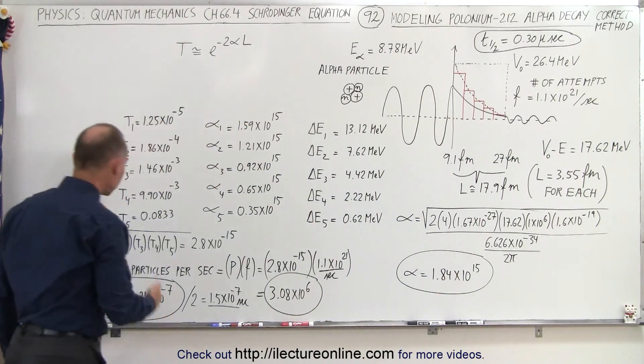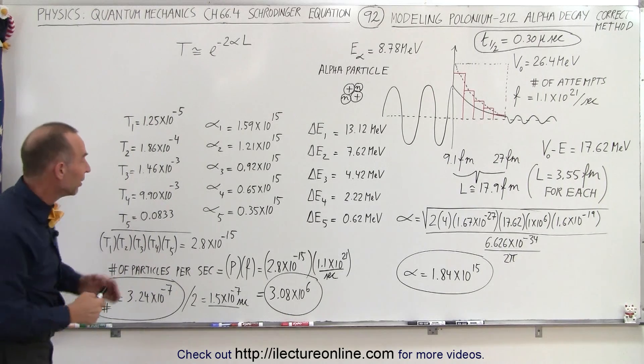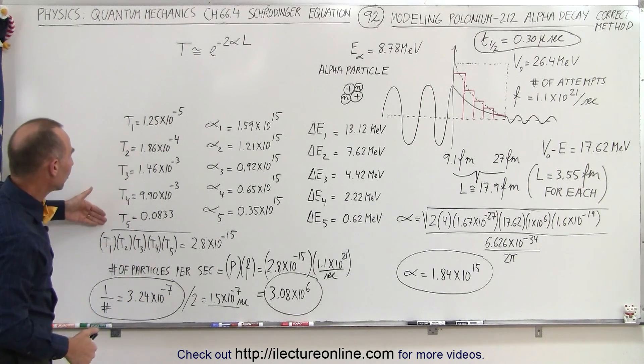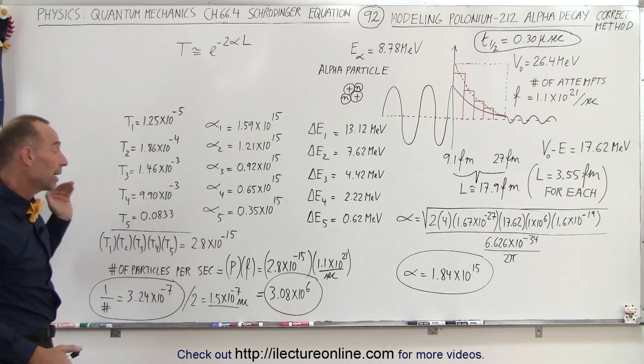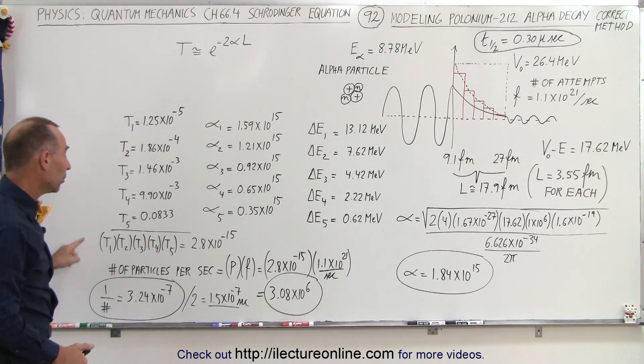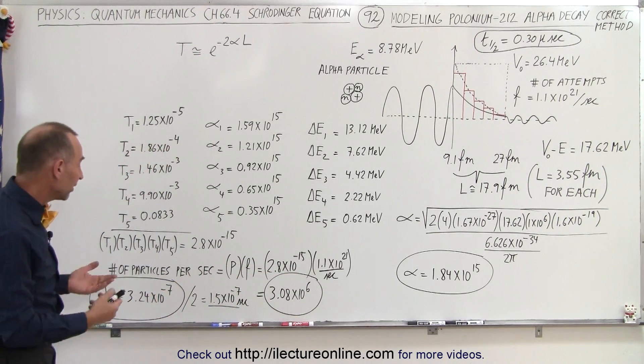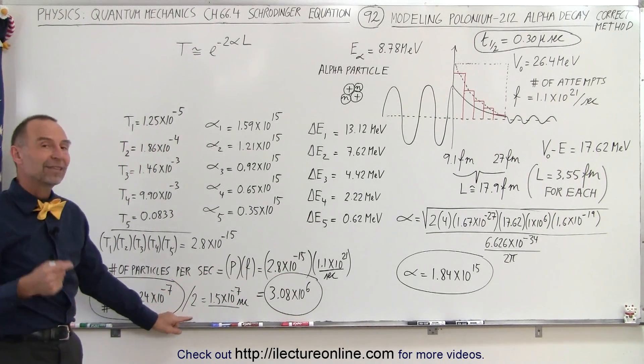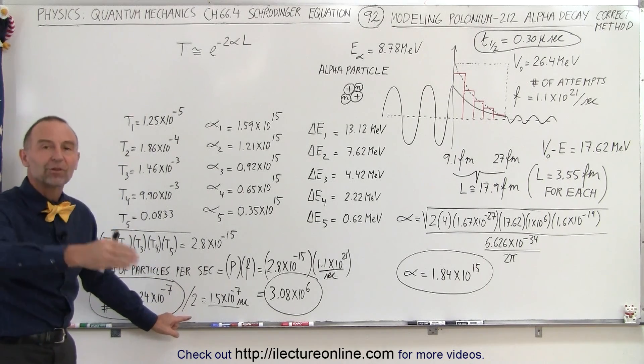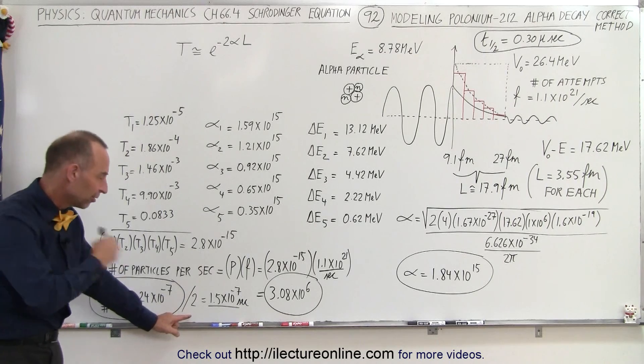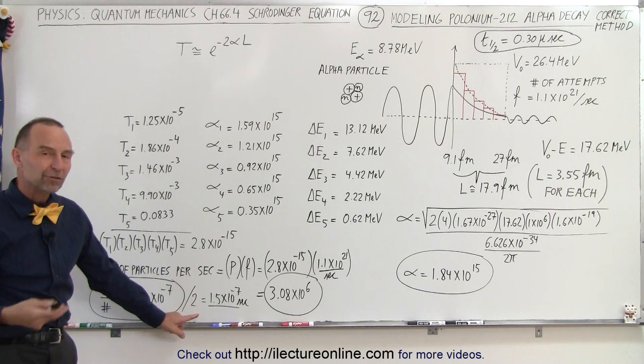And then we multiply the probabilities, which is the same value as we got for the transmission coefficients. We multiply them all together, that's the probability the particle will make it through all five. Then the number of particles per second will be obviously well over a million, about three million. But if we take the inverse of that, that gives us the average time between particles breaking through. If there was an infinite number of particles trying to break through, you can see that one after the other would do that every three microseconds. Divide that by two gives you the approximate half-life.